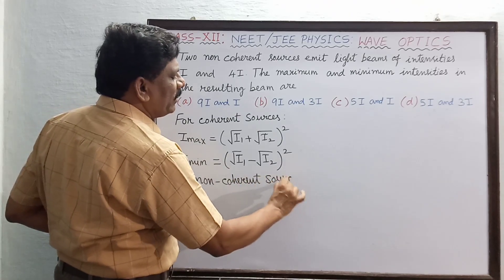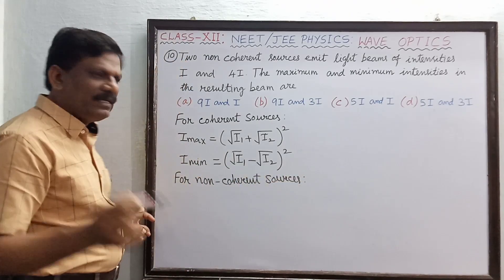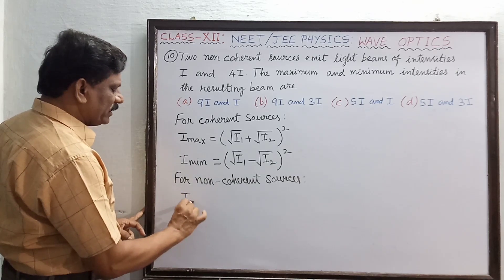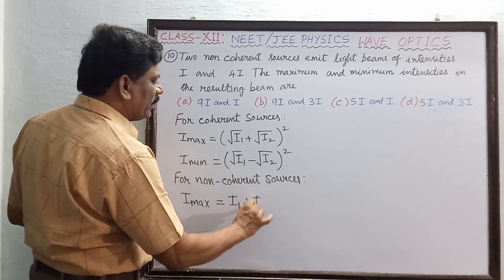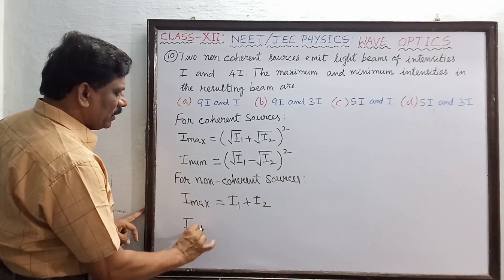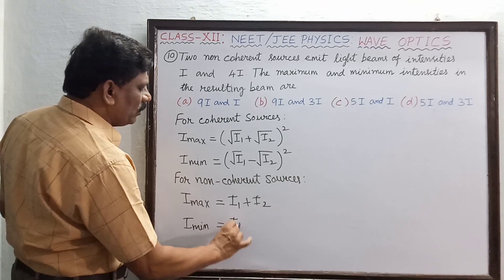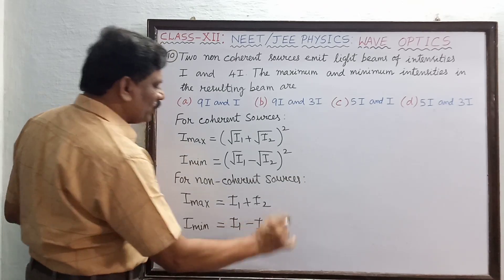It is very easy. What is the condition? I maximum is directly equal to I1 + I2, and I minimum is directly equal to I1 - I2. Very simple.